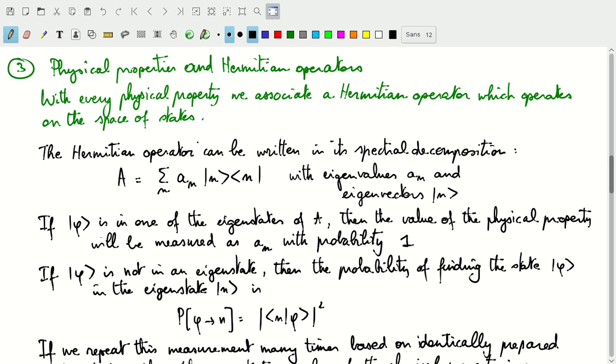So, since these operators are Hermitian, we can actually write them through their spectral decomposition. That's something I've talked about in a previous video. So, we can write projection operators onto the eigenvectors.